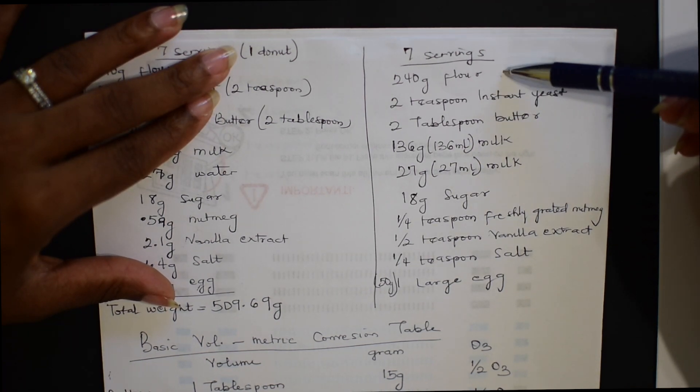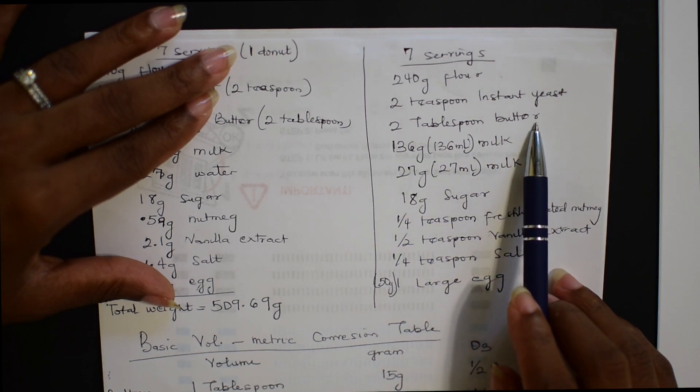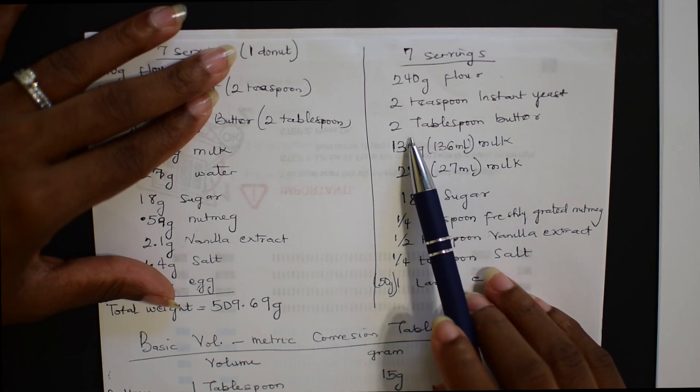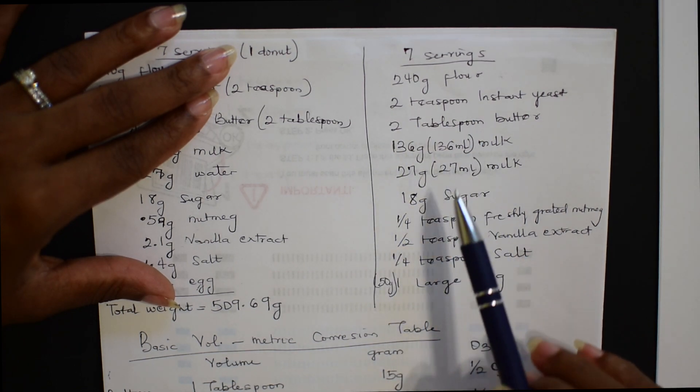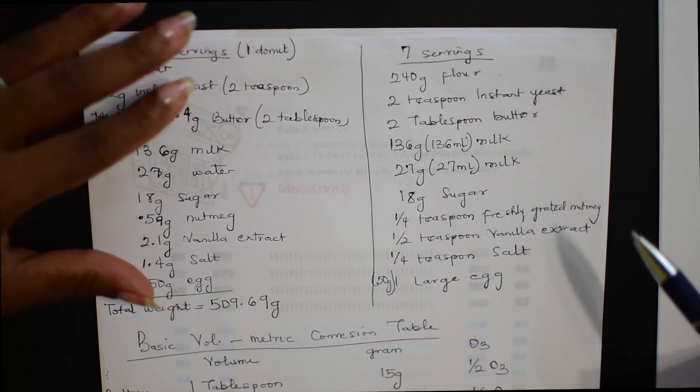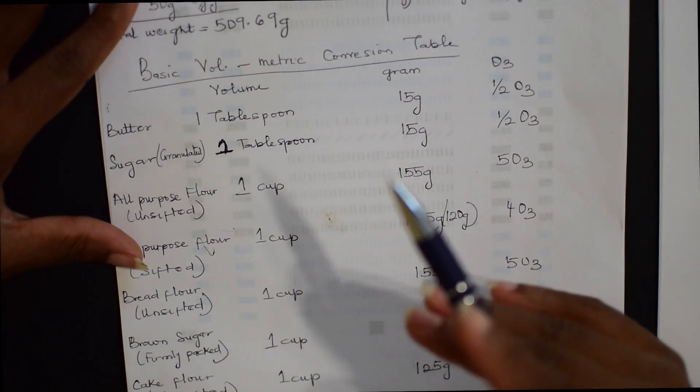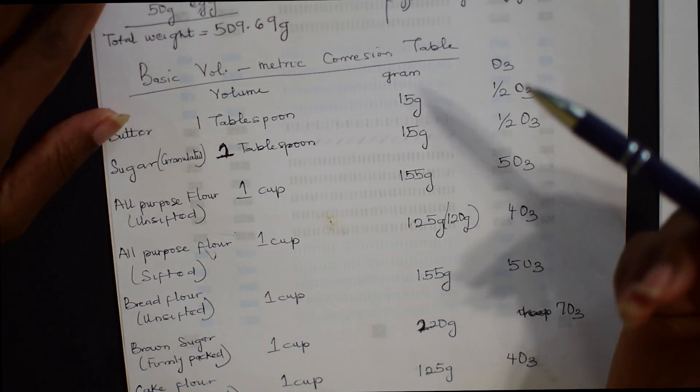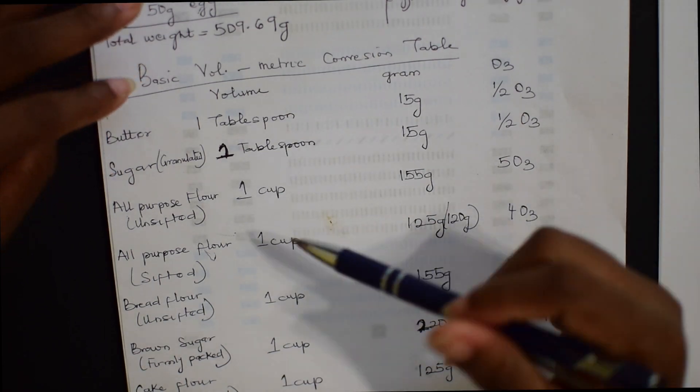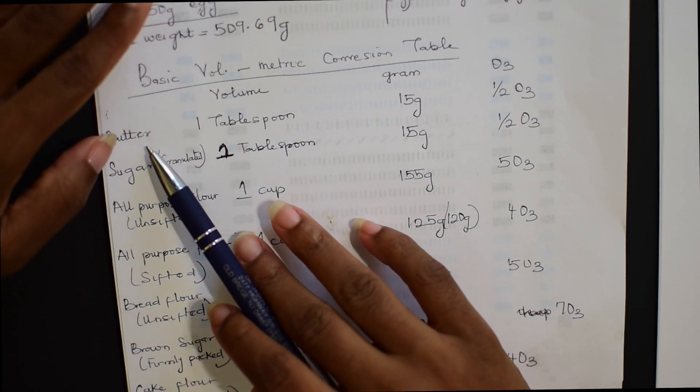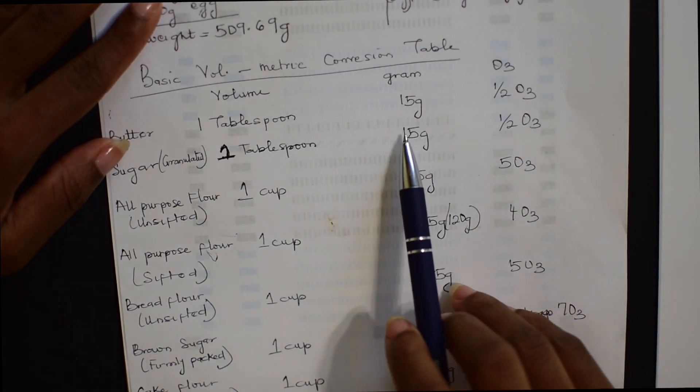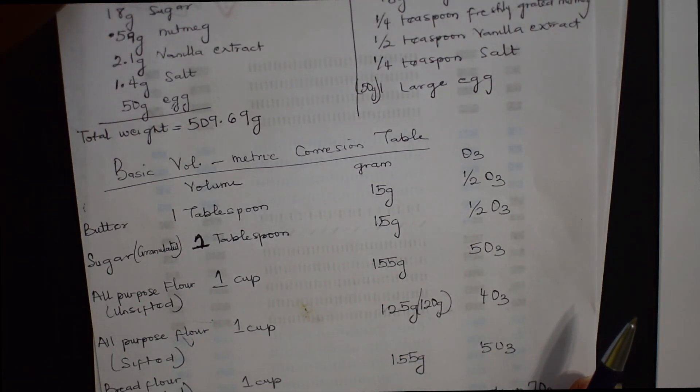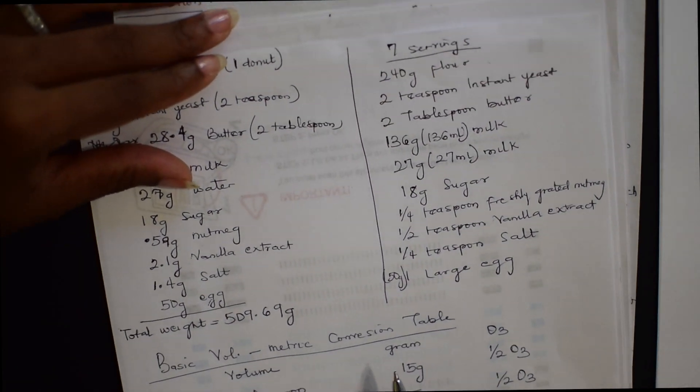This was my formula right there. You will see that for some of the ingredients, I did not even put the metric weight. I was using the volume, which was like tablespoon, teaspoon and all that. So what you need to do is just to get a volume to metric conversion table, which I was talking about earlier on. And from there, all you need to do is just to do the mathematics.